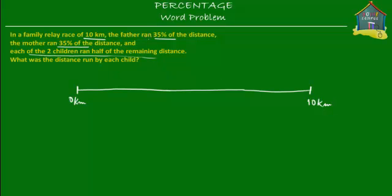The father ran 35% of the distance. If 0 to 10 represents 100% of the distance, then the father ran 35% — somewhere until here. So this is 35% of the 10-kilometer distance, which is what was run by the father. Let's mark this in blue. This is the father's part of the race.